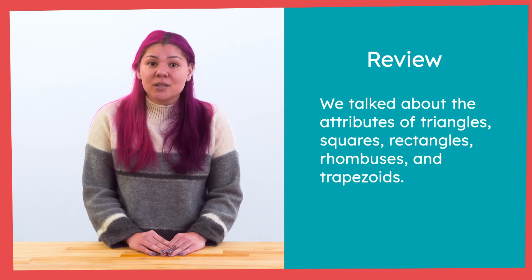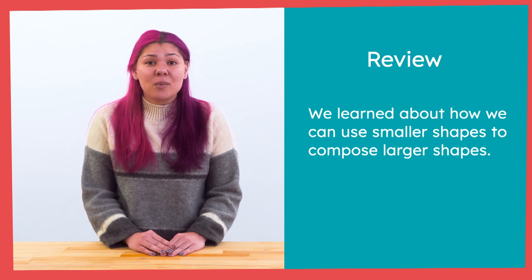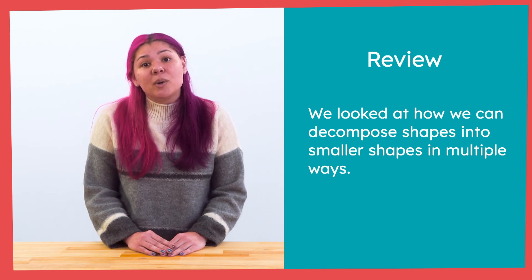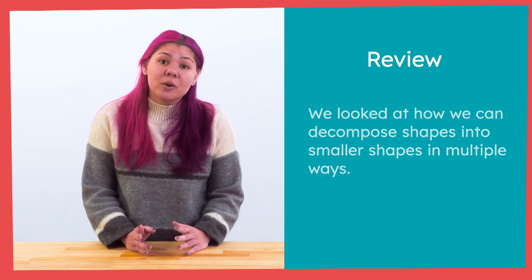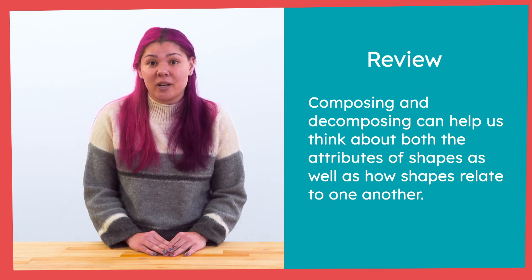I feel like I learned so much about shapes with you — thank you so much for your help. Today we solved three different challenges by working together and using what we knew about the attributes of shapes. We talked about the attributes of triangles, squares, rectangles, rhombuses, and trapezoids. We learned how we can use smaller shapes to compose larger shapes, and how we can decompose shapes into smaller shapes in multiple ways — just like we can decompose numbers. Today, I want you to find something rectangular around your house and spot the two triangles in it, then try to split a piece of paper in half to form two triangles. You can find shapes everywhere. See you next time!